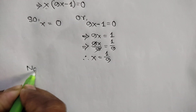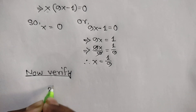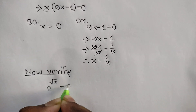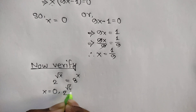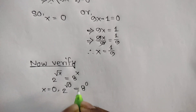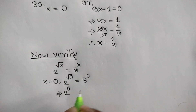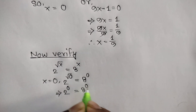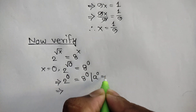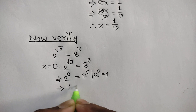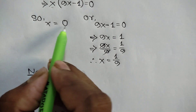Now let's verify. Our equation is 2 to the power square root of x is equal to 8 to the power x. When x is equal to 0, then 2 to the power square root of 0 is equal to 8 to the power 0. The square root of 0 is 0, so the left side is 2 to the power 0, which equals 1. And 8 to the power 0 is also equal to 1. So left-hand side equals right-hand side, and the value x is equal to 0 is verified.